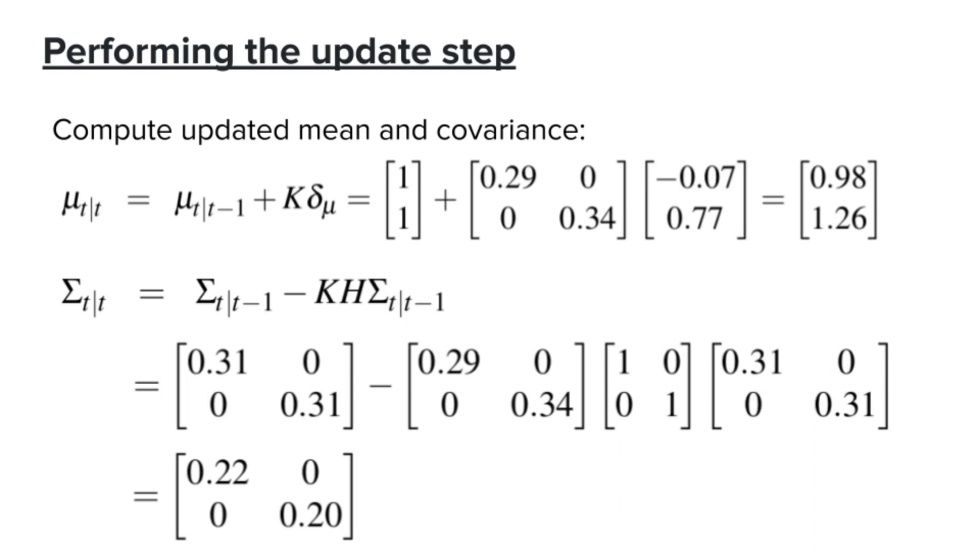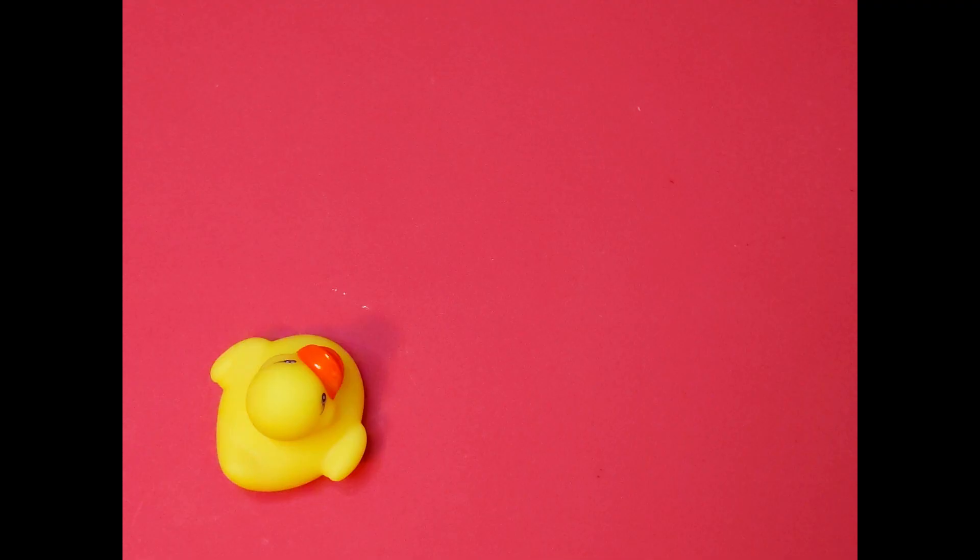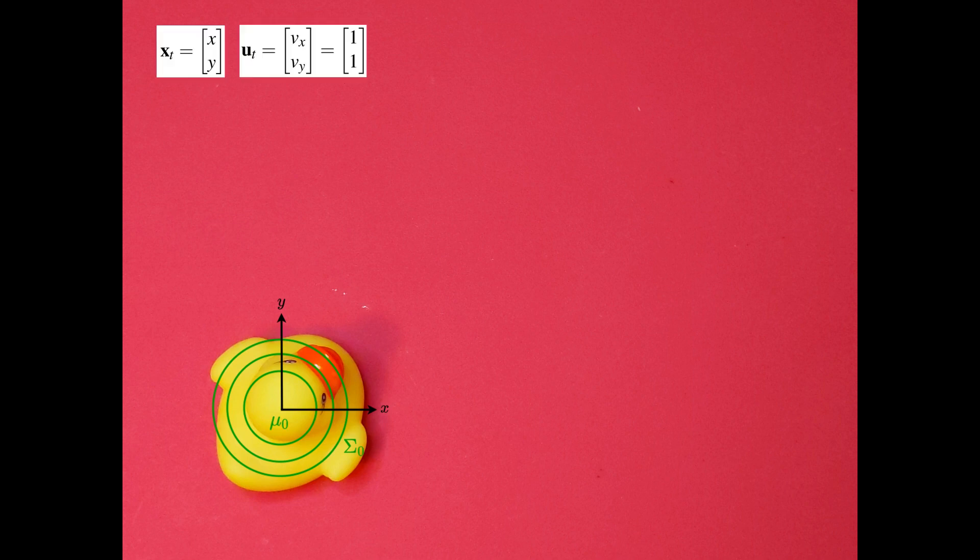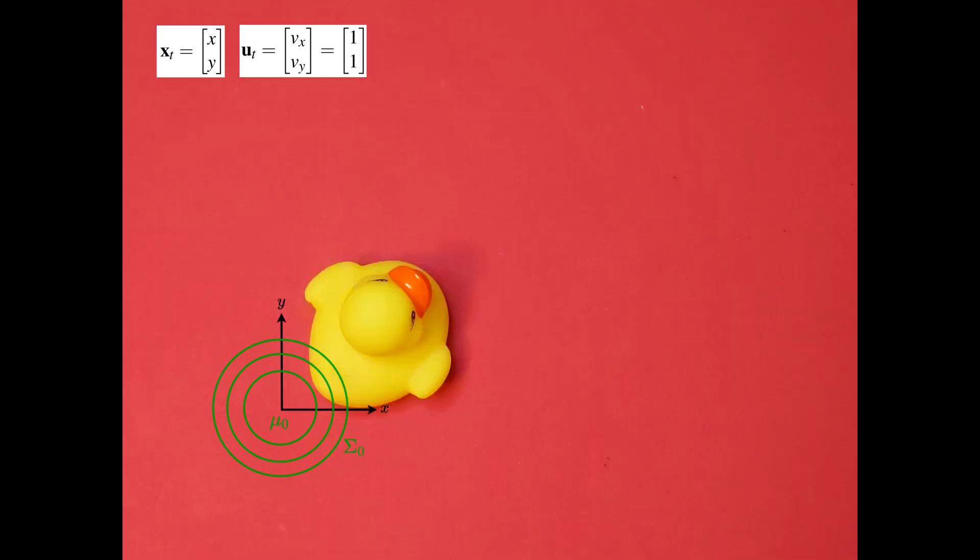Let's do a quick recap. So, we have a robot in the room, and we have an initial belief of where the robot is currently at. This initial belief is represented as mu zero and sigma zero. The state of the robot is its x and y coordinates, and the robot is moving with a constant velocity u_t. After we apply the control signal u_t, the robot moves, and so does our belief. To get the new belief, we perform the predict step.